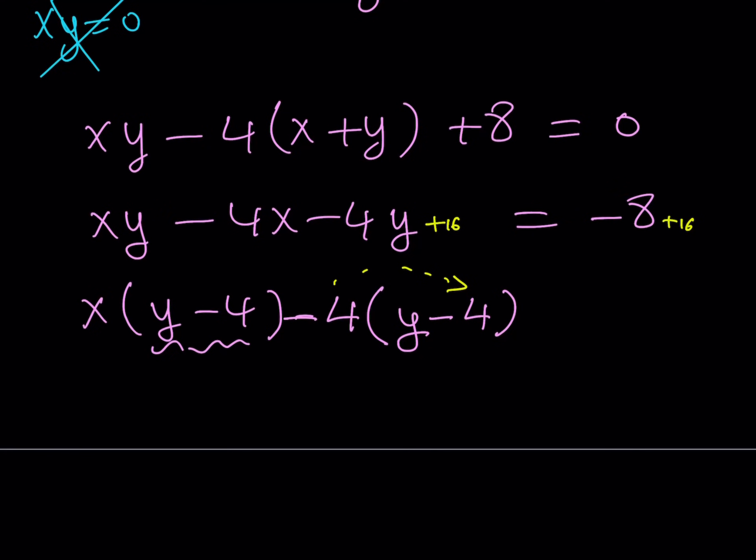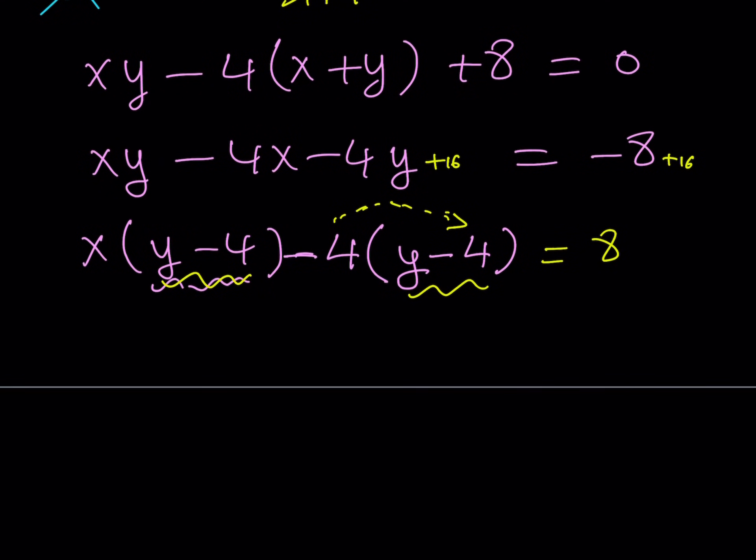And in case you're wondering what Simon is, it is also called SSSFFT, which is Simon's favorite factoring trick. But I just call it Simon because it's shorter. Okay, so I'm using Simon here. And since I added 16 to both sides, that is going to equal eight. Great. So now we have a common factor y minus four, y minus four. That was the goal. And of course, you can do this problem differently. But this gives us x minus four multiplied by y minus four is equal to eight.